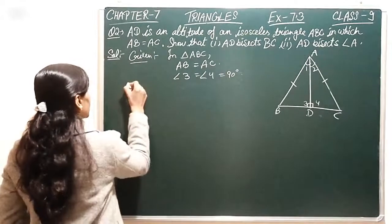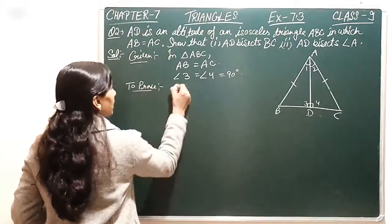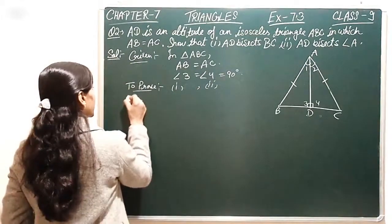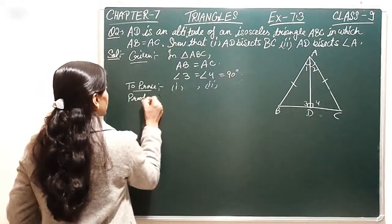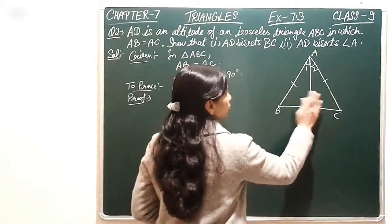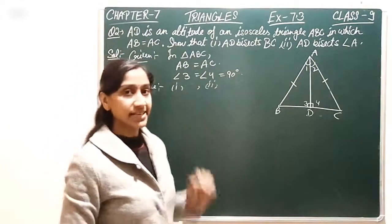And now, to prove, we have to prove first part and second part. Now start with proof. Firstly, let's see here if we have two triangles, if we have to prove them, then our first part and second part can be proved.